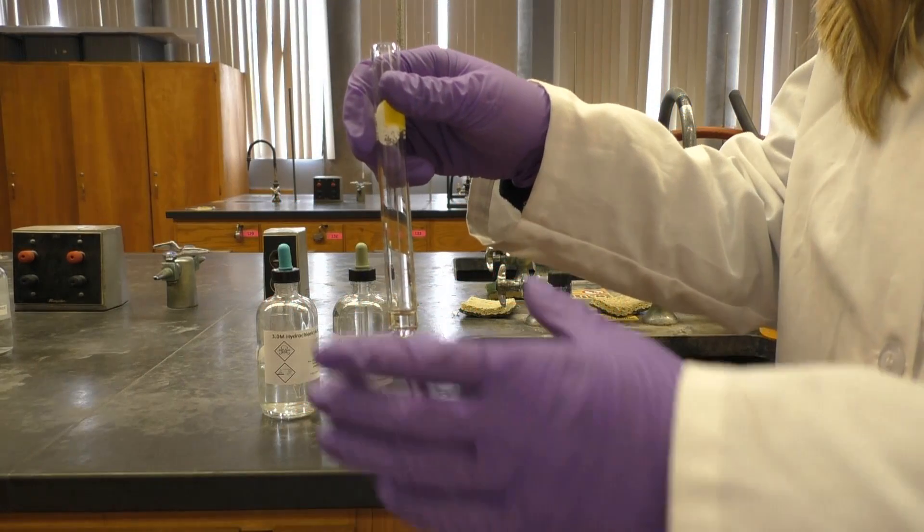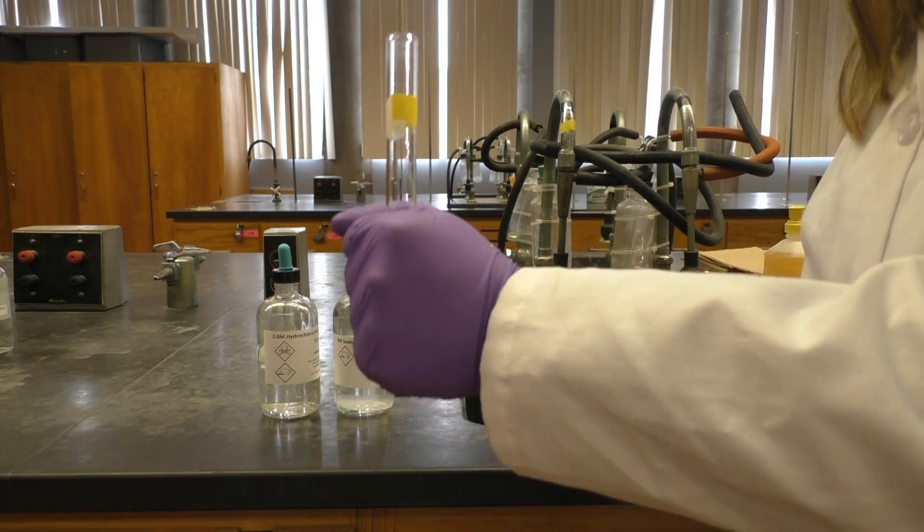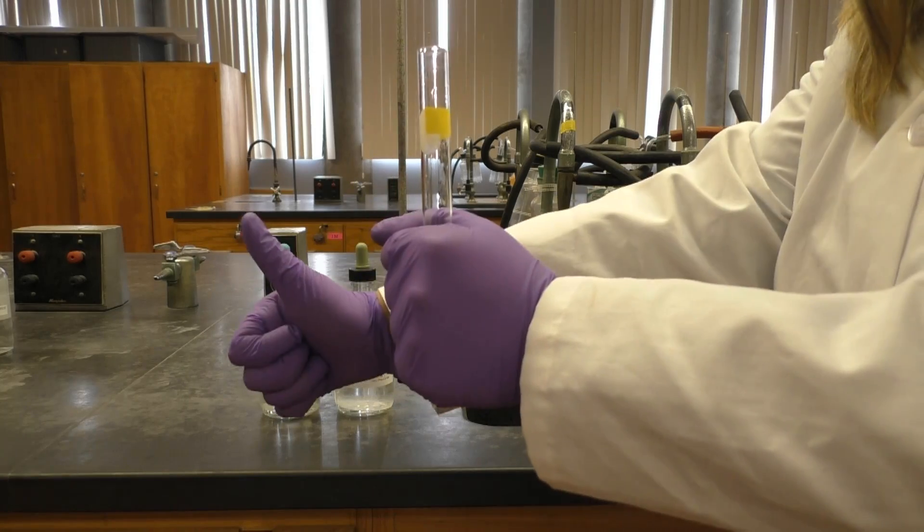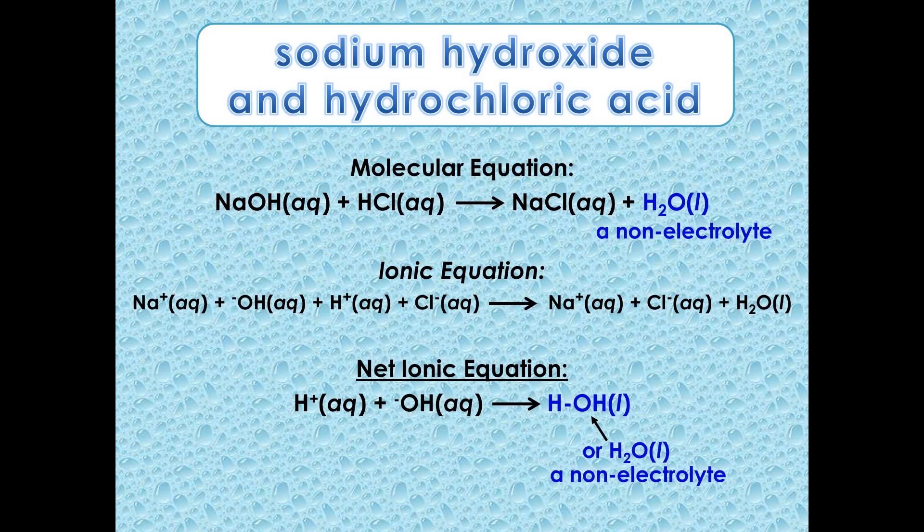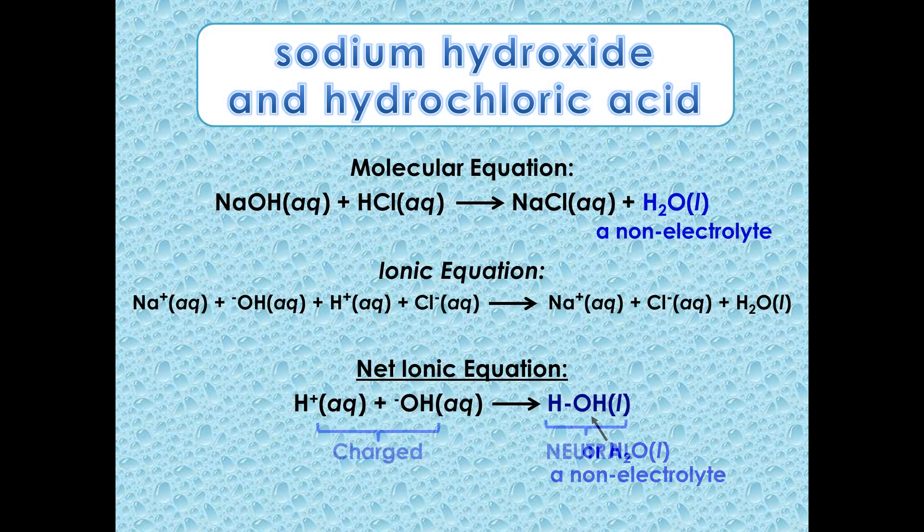If you wrap your hand tightly around the test tube as you add the second reagent, you'll notice the tube heats up. That's because this is an exothermic neutralization reaction. Notice that in the net ionic equation, the starting materials are charged, but the product is neutral.